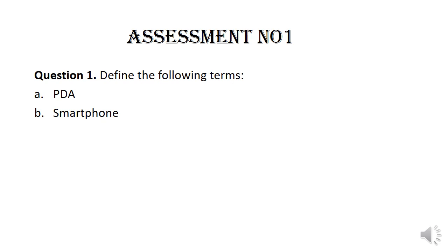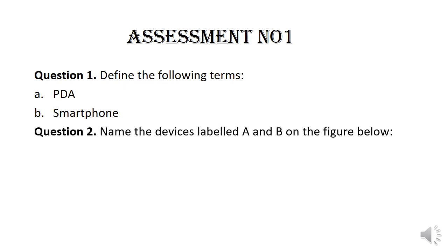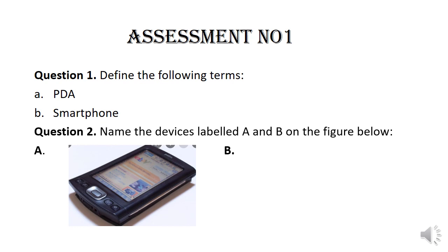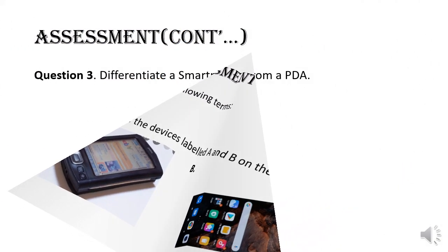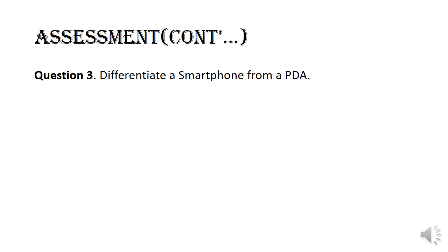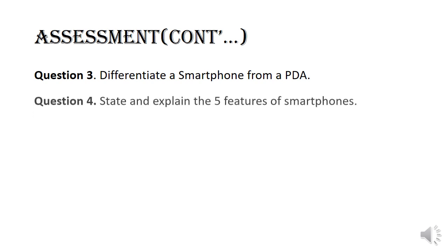Assessment number one. Question number one: define the following terms — A) PDA, B) smartphone. Question number two: name the devices labeled A and B on the figure below — the device shown by the capital letter A and the device shown by the capital letter B.